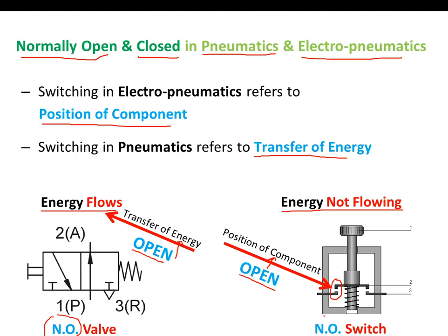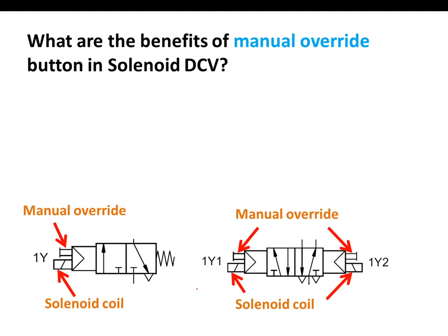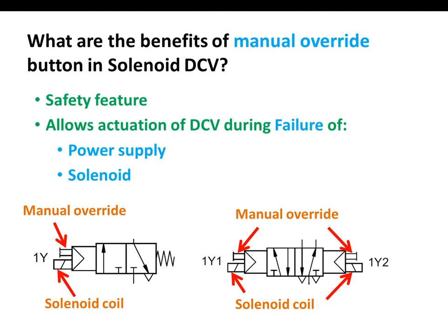What are the benefits of manual override? When we talk about DCVs in electro-pneumatics, they are solenoid driven, and most designs come with a manual override. A manual override is a safety feature that allows actuation of the DCV even during failure — either failure of the power supply or failure of the solenoid itself. When the solenoid fails, we can still actuate manually using this manual override.